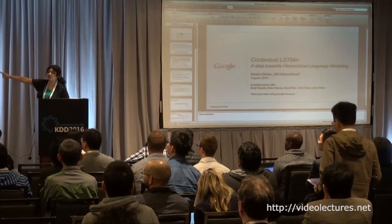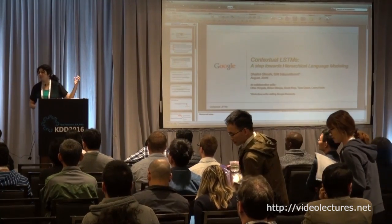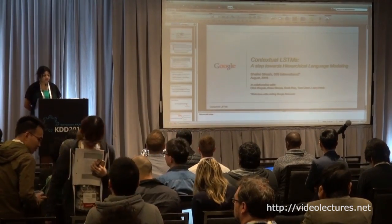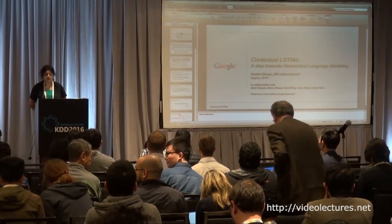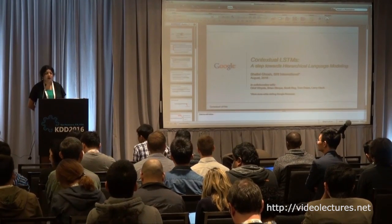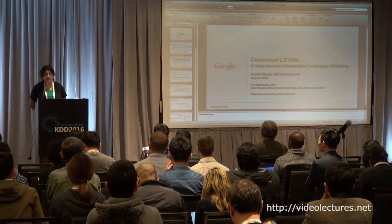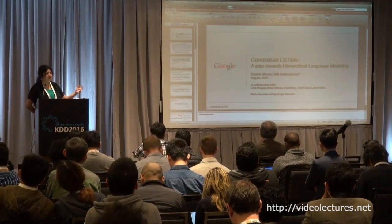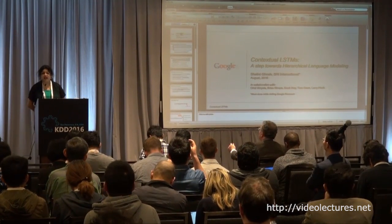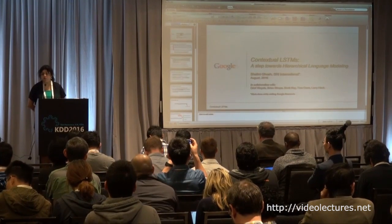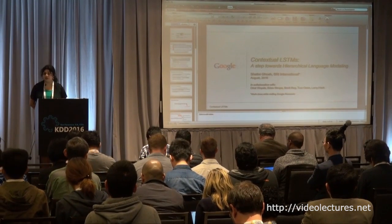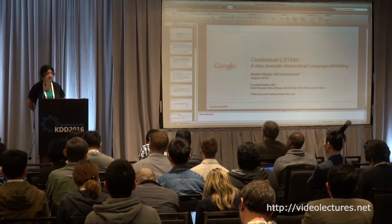We're not able to put the presentation on full screen — we're having some issues with the Mac display. So the title of the talk is Contextual LSTMs. The reason is that we wanted to explore how we can incorporate context into language modeling. Our previous presenter was talking about using convolutional neural nets for text modeling, and we will get into long short-term memory models, called LSTMs, and show a modification where we incorporate context in the form of topics into the model.